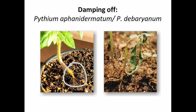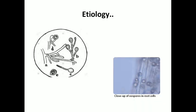In post-emergence, infection occurs at the collar region and the infected tissue becomes soft, leading to collapsing. In case of etiology, the mycelium is hyaline, aseptate, and branched. Sporangia are borne on sporangiophores and they germinate to form zoospores. Oospores are formed by antheridium and oogonium.